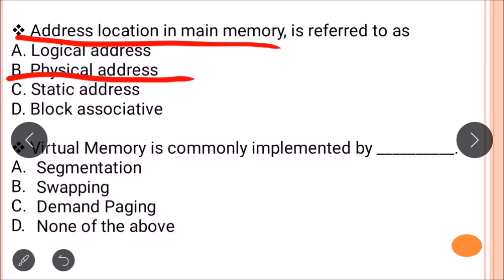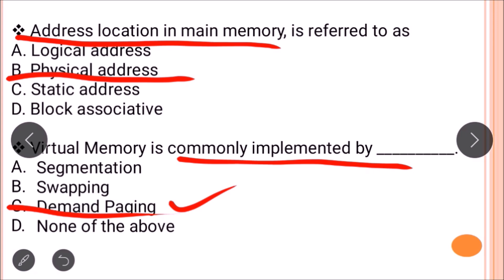The next question is: virtual memory is commonly implemented by? We have already studied virtual memory and demand paging. Some pages of a process are in main memory and others are in virtual memory. When demand is generated for a page, it moves from virtual memory into main memory via demand paging. So virtual memory is implemented by demand paging. The correct answer is option C.